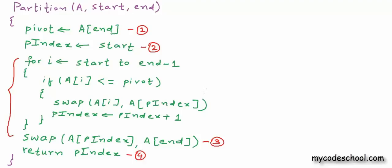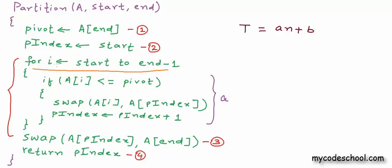The statements inside the for loop are simple statements and will together take some constant time. Let's say the statements inside the for loop take constant time a, and the other simple statements together cost b. So the time taken by partition is a·n + b, which is O(n). Here n is the length of the subarray being partitioned.